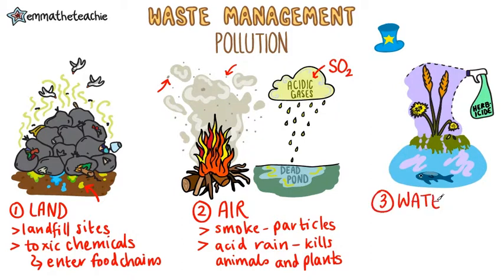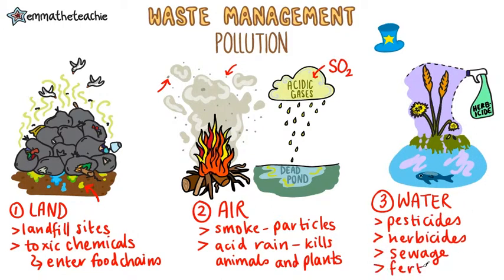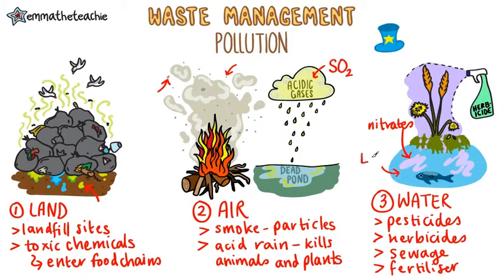Thirdly, we've got water pollution. This includes pesticides, herbicides, sewage, and fertilizer — all of these can get into our waterways. The last two contain nitrates. When they're washed into the water, it can cause algae to grow very rapidly. But the algae will then die, and when this happens microorganisms break it down. They use lots of oxygen out of the water to respire, and this low oxygen level means that aquatic organisms like fish die.